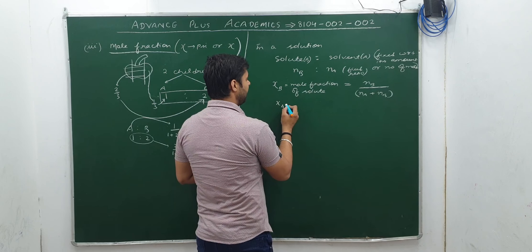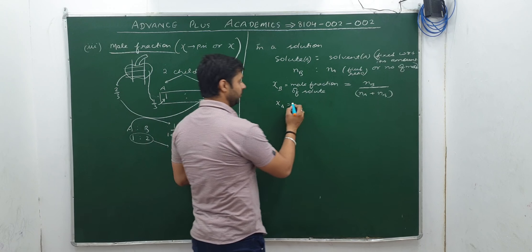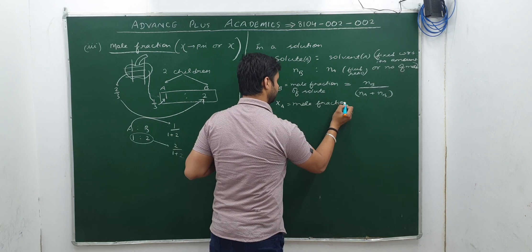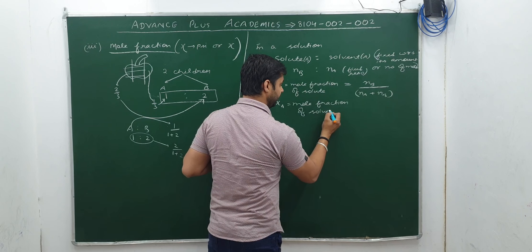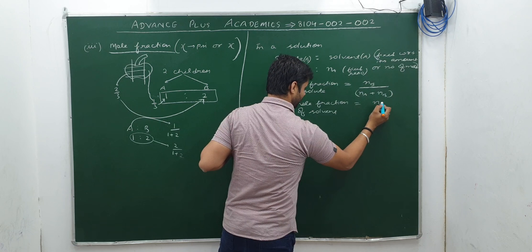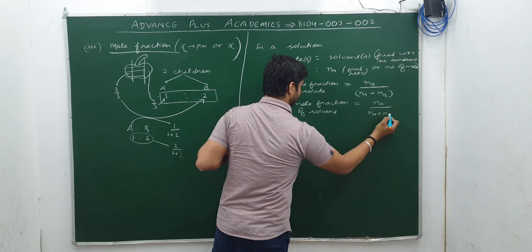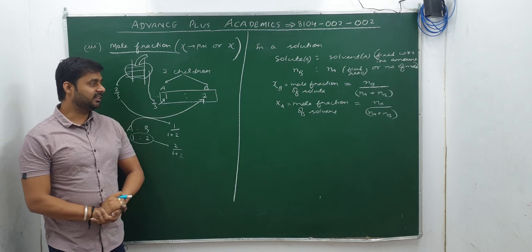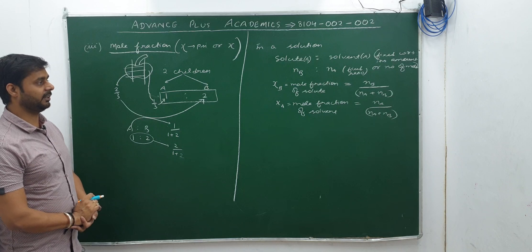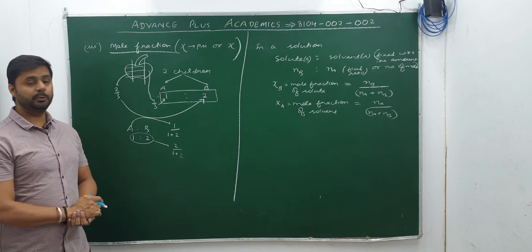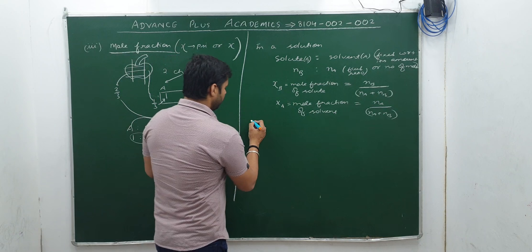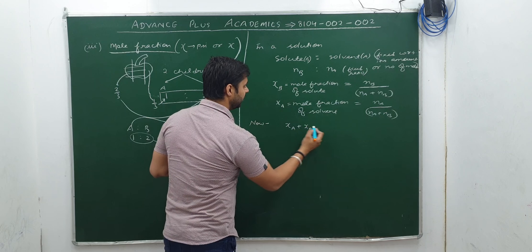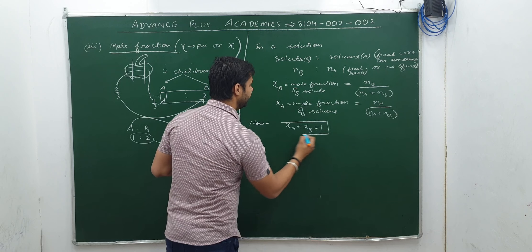In the same way, the mole fraction of solvent (ξ_A) equals N_A divided by (N_A + N_B). Here ξ_A and ξ_B are the mole fractions of solvent and solute respectively. One more important point: if you add ξ_A and ξ_B, their total will be equal to 1.